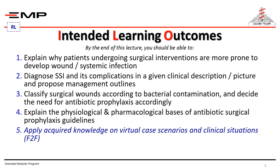This is part one. By the end of this lecture, you will be able to explain why patients undergoing surgical interventions are more prone to develop wound and systemic infections, diagnose surgical site infection and its complications in a given clinical description or picture, propose management outlines, classify surgical wounds according to bacterial contamination, decide the need for antibiotic prophylaxis accordingly, explain the physiological and pharmacological basis of antibiotic surgical prophylaxis guidelines, and in the face-to-face session, apply the knowledge you acquired on virtual case scenarios and clinical situations.